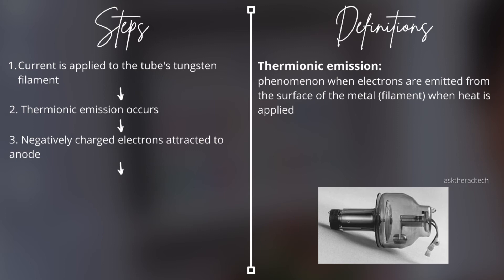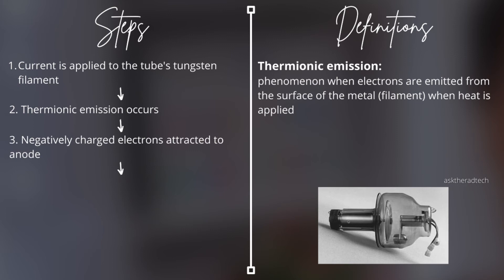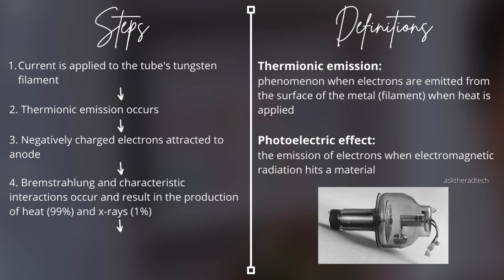After this happens, the photoelectric effect takes place. The photoelectric effect is the emission of electrons when electromagnetic radiation — such as light — hits a material. Here, electrons hit the tungsten target of the anode, and electrons emitted in this manner are called photoelectrons. Step four: as the electrons rush to hit the target, two very important interactions occur — Bremsstrahlung and characteristic interaction — resulting in the conversion of energy to 99% heat and 1% x-ray photons.